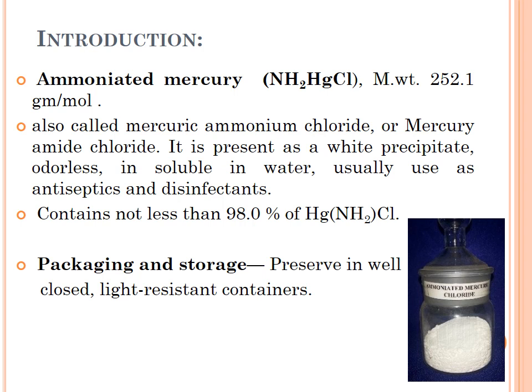So, what is Ammoniated Mercury? Ammoniated Mercury has the chemical formula NH2HgCl with a molecular weight of 150.1 g/mol. In addition to the name Ammoniated Mercury, it can also be called Ammonium Chloride or Mercury Amide Chloride. It exists as a white precipitate, an odorless powder with a metallic taste.